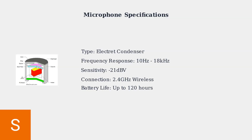The first step in optimizing your HyperX Cloud3 Wireless Microphone is adjusting the gain control. Gain determines how much your microphone amplifies the input signal. The optimal gain range is -10 to +15dB. Always start at 0dB and adjust upward in 3dB increments to find your ideal setting.